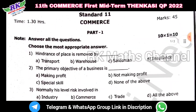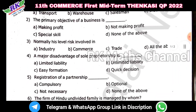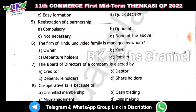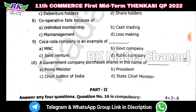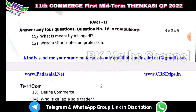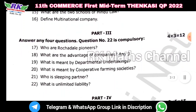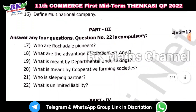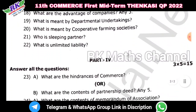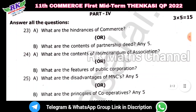So total, there are 55 marks. Part 1: 11 marks. Part 2 is a question — any 4 questions, 4 times 2 equals 8 marks, question number 16. Part 3 is a question — 4 questions, 4 times 3 equals 12 marks, question number 22. Part 4 is a question — 5 questions, choose 3, 5 times 3 equals 15 marks, each question is 10.